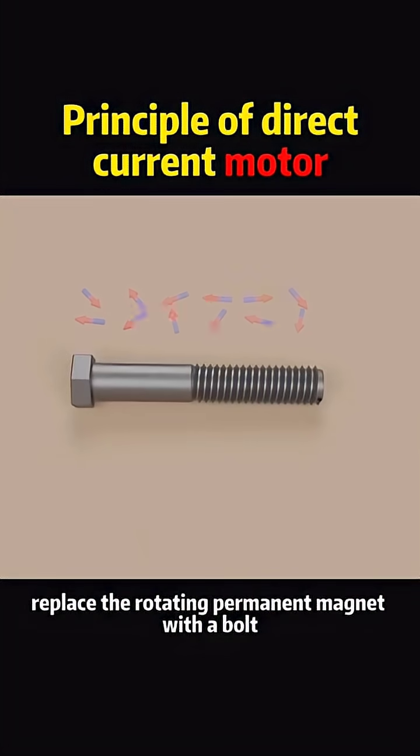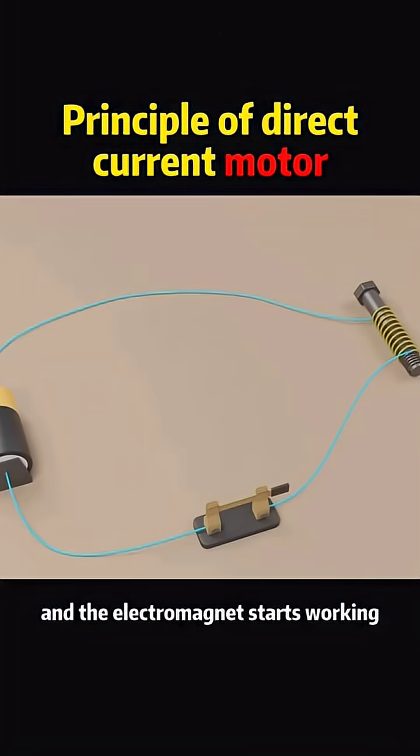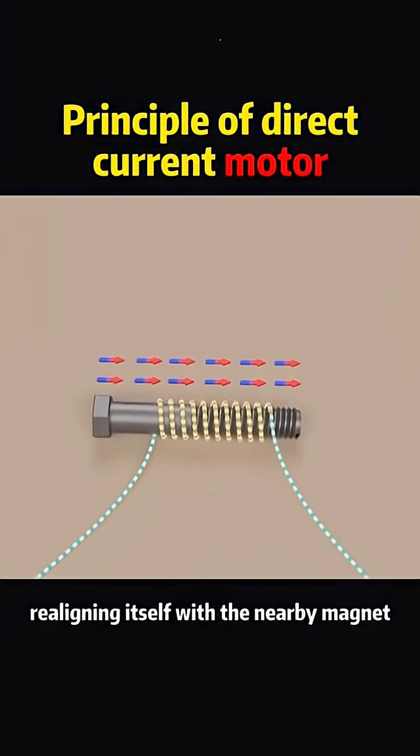Now, replace the rotating permanent magnet with a bolt, connect wires, and the electromagnet starts working, realigning itself with the nearby magnet.